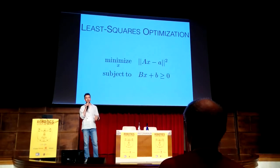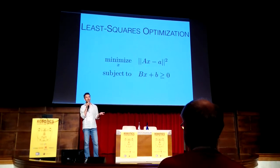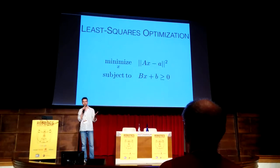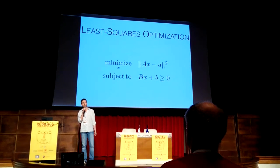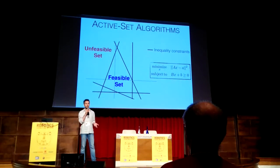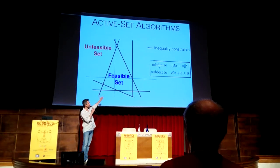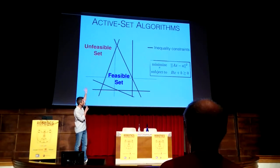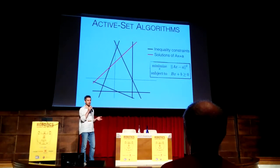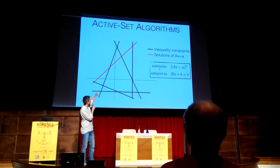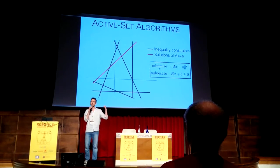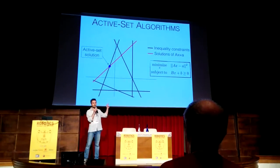You can formulate task-based inverse dynamics as a least-squares optimization, as simple as this. In robotics, you typically solve it using an active-set algorithm. Let me explain with a 2D example how it works and why it can be a problem for robustness. You have a bunch of inequality constraints that divide your space into a feasible set and a non-feasible set, and a cost function whose optimum is over this red line.